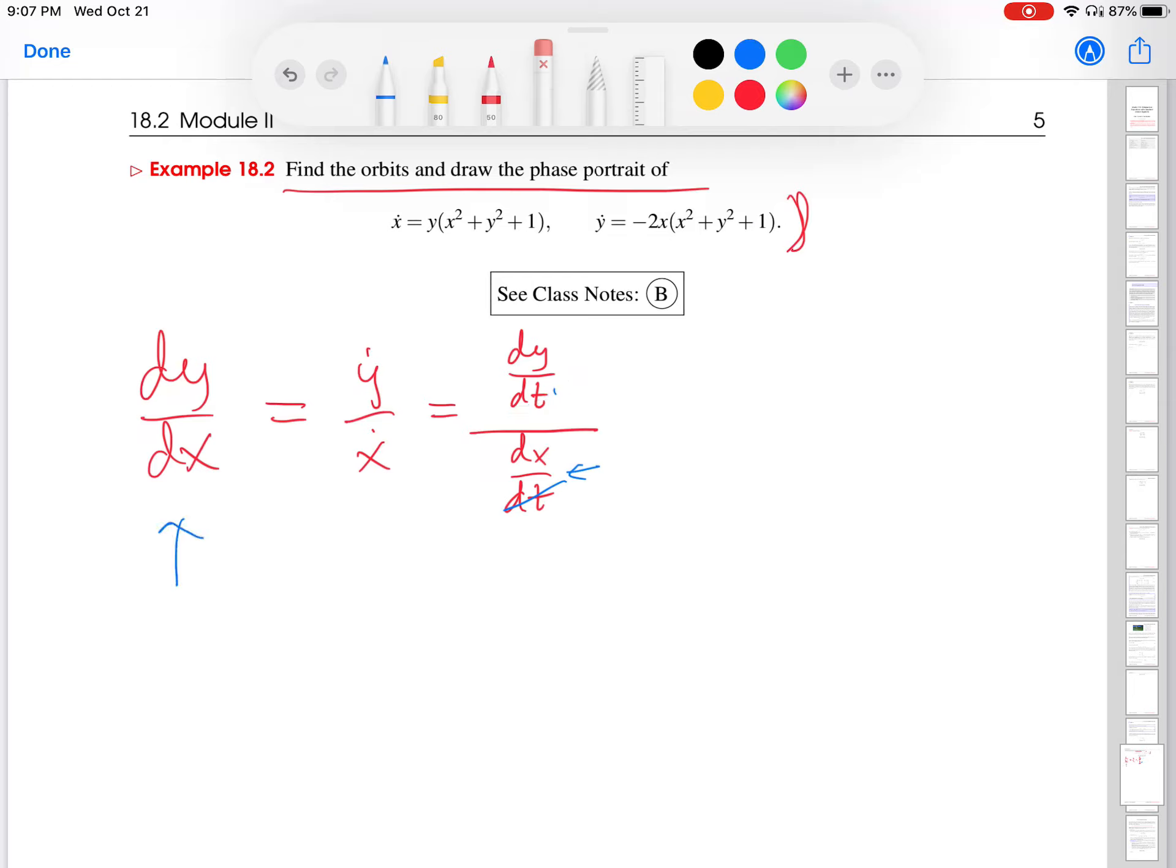This is by no means a rigorous derivation. It's just more intuition to give you some sense of why you should believe the fact that the slope of the line tangent to the orbits of a plane autonomous system is given by the ratio of y dot and x dot, where x dot and y dot are the equations of the system. So what I'm going to do here is take the y dot for this system which is minus 2x times (x squared plus y squared plus 1), and then take the x dot and divide that down here.